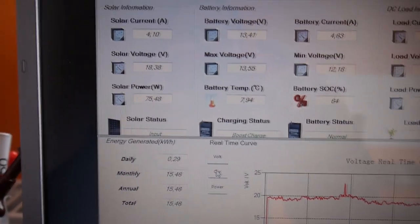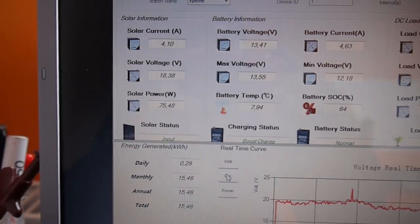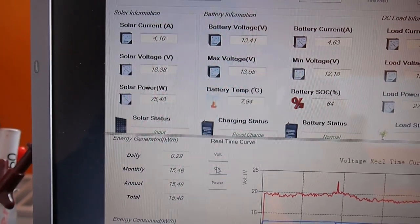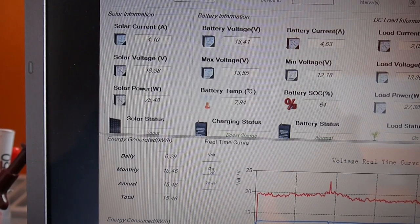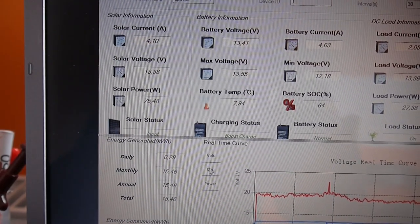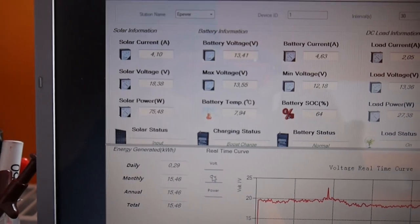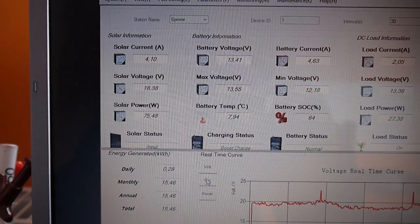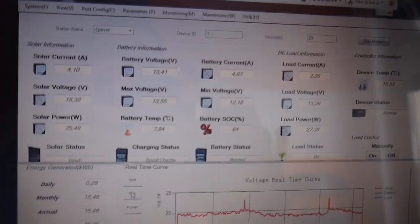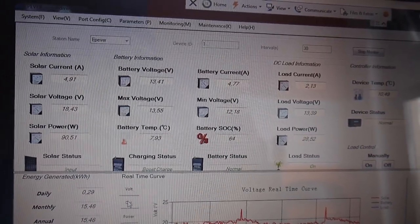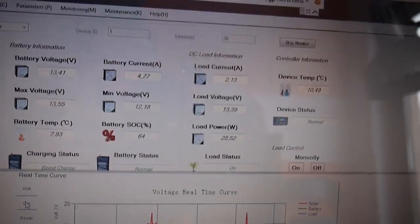I have the voltage there, and as you may see it keeps the panels—because they are all connected in parallel for now—at 18.38 volts. 75 watts now and 4.1 amps, turns to be like 4.6 amps to the battery.